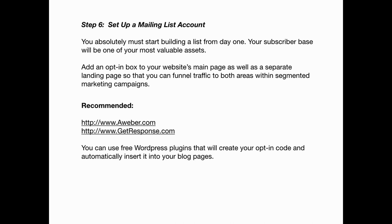Step six: set up a mailing list account. You absolutely must start building a list from day one — your subscriber base will be one of your most valuable assets. Add an opt-in box to your website's main page as well as a separate landing page so that you can funnel traffic to both areas within segmented marketing campaigns. I recommend AWeber.com or GetResponse.com. You can also use free WordPress plugins to help make your opt-in code integration much easier.